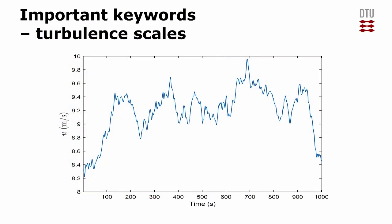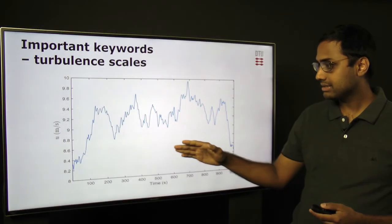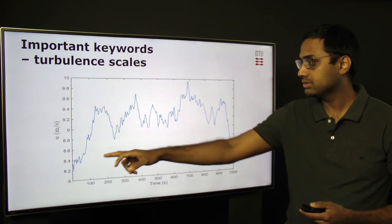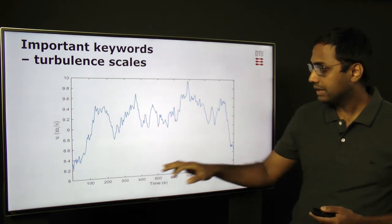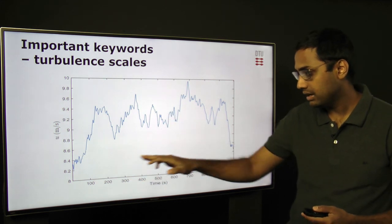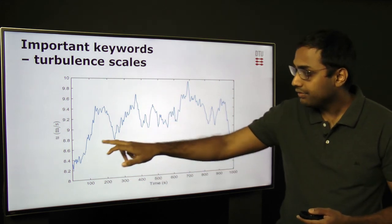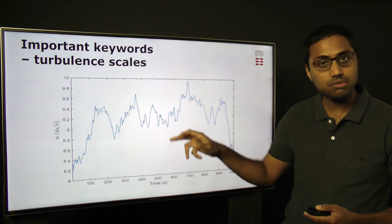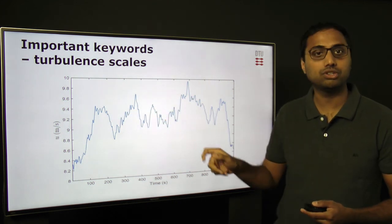The next very important keyword is turbulence scales. Again, as an example of this time series where you see random fluctuations, we can see that there are fluctuations which are occurring on a very large time scale and fluctuations which are happening on a very small time scale, that is rapid fluctuations.